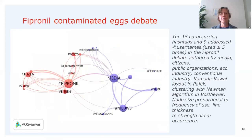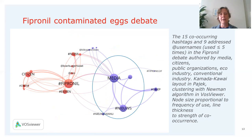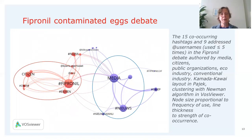In the third case — fipronil-contaminated eggs — there were fewer actors using hashtags and usernames, but again media appear as their own cluster referring to each other, and citizens refer to the main hashtag of the debate, 'fipronil.' There is also a notable red node for NVWA, which is the food safety authority in the Netherlands, but environmental organizations were not active in this debate.